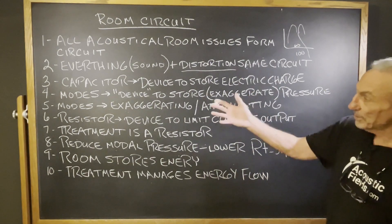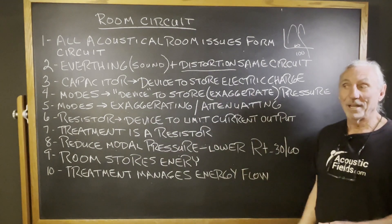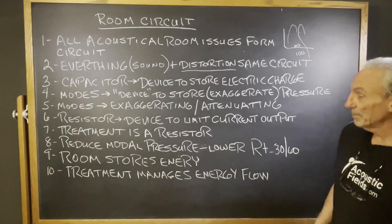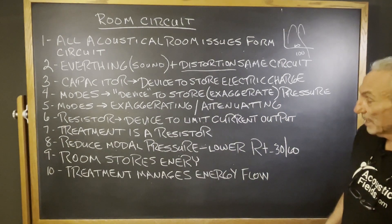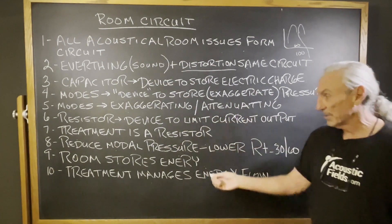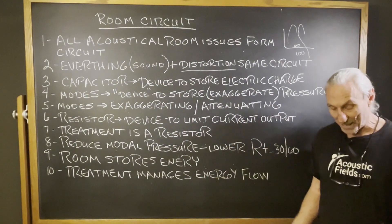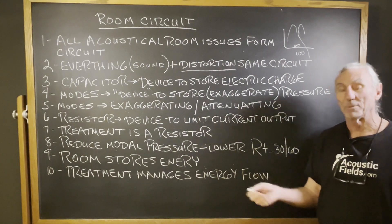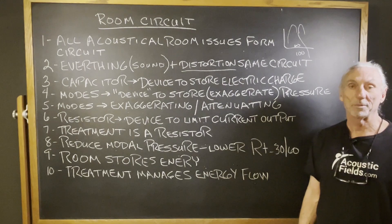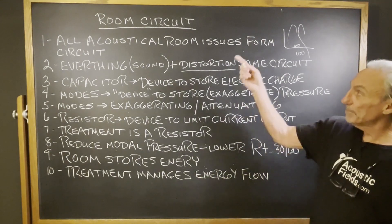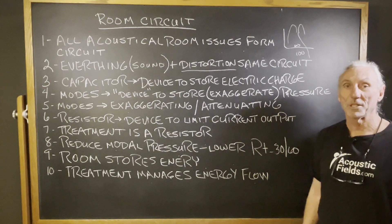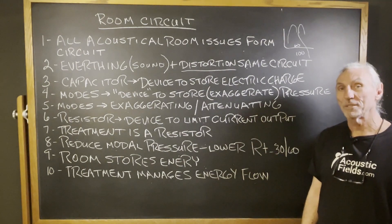So capacitors and resistors — there's a good analogy that could be made between room acoustics and electrical circuits. Treatment manages the energy flow within the room: the pressure fluctuations, the reflections, the reverb times and all of that. The room stores the energy — it's the capacitor. So room circuits and electrical circuits are kind of related to the acoustics issues that go on inside of a room.